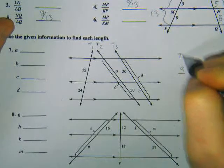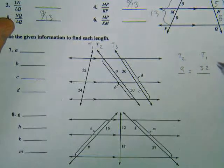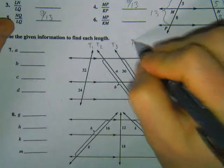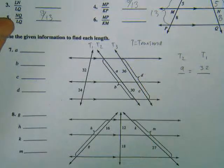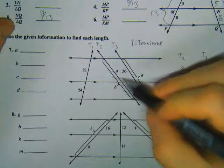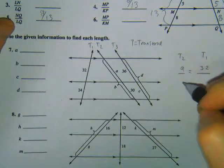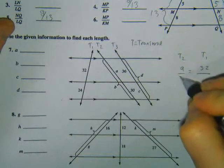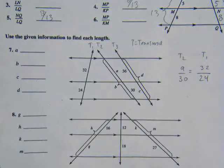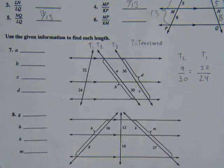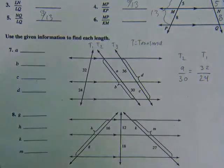This would be T1. And just match them up. So A matches up with 32. Bottom here, 30 is going to match up with 24. So let's just cross multiply and divide. 30 times 32 divided by 24. A is 40.